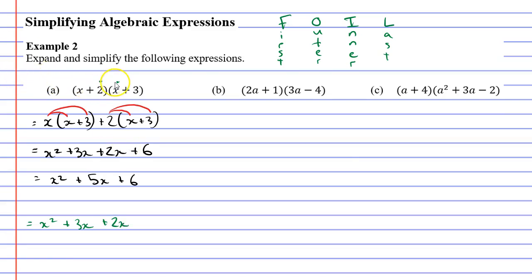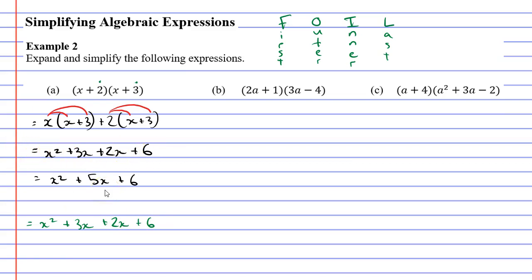The last step in FOIL is Last — the last term in each set of brackets, which are the 2 and the 3. 2 times 3 gives us 6. You'll notice that using the FOIL method we got the exact same result as the first method, and this will simplify to x squared plus 5x plus 6.